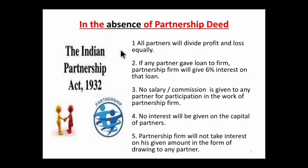If a question involves a silent partnership deed, or if two partners have a dispute, then the Indian Partnership Act 1932 rules will be followed. Rule 1: all partners will divide profit and loss equally. If the partnership deed has not specified the ratio, they will share equally.